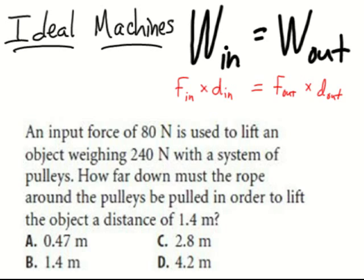This problem involves pulleys. An input force of 80 newtons is used to lift an object weighing 240 newtons with a system of pulleys. How far down must the rope around the pulleys be pulled in order to lift the object a distance of 1.4 meters?